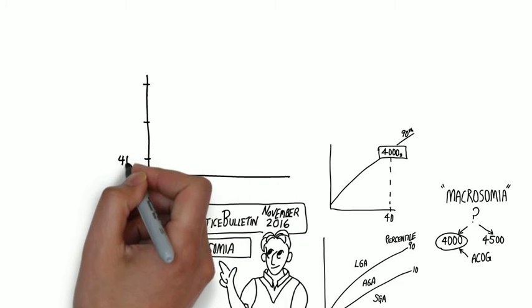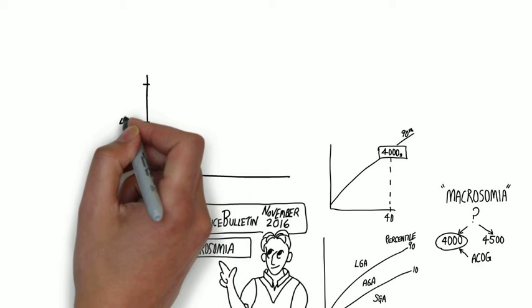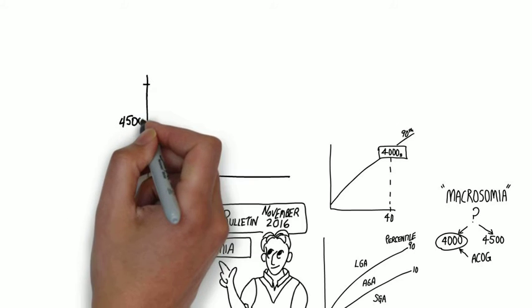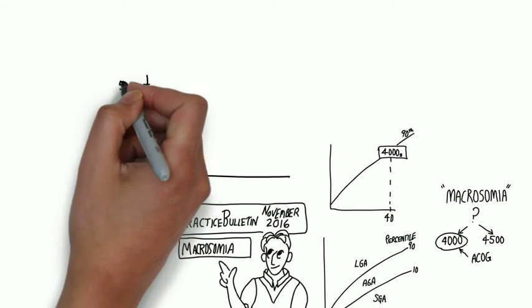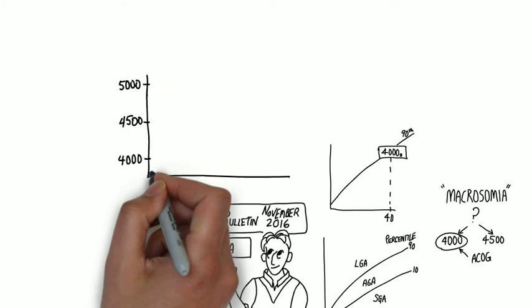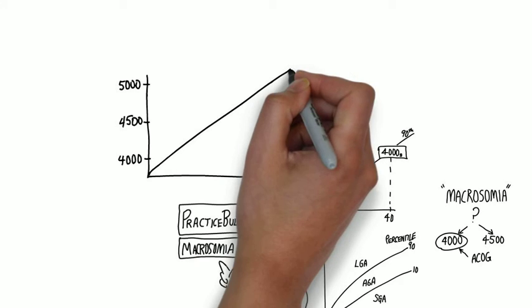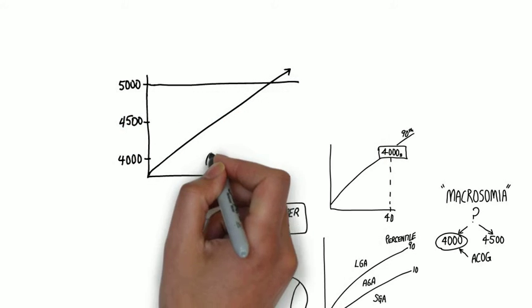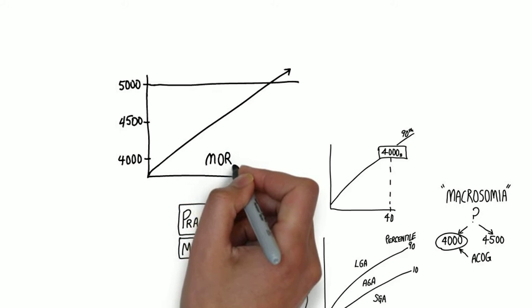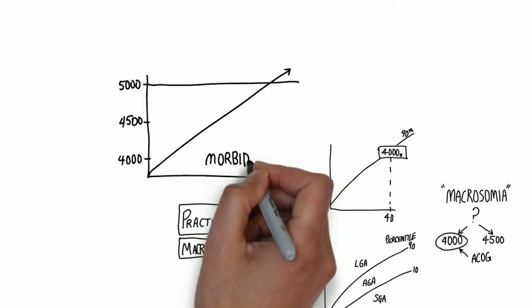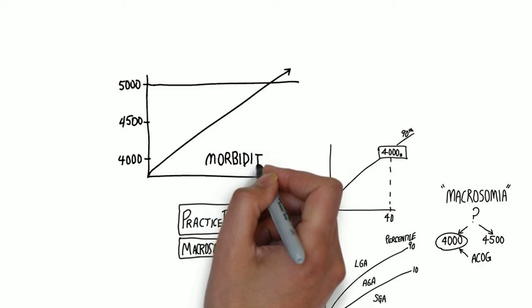What's clinically important about macrosomia is whether a fetal weight is associated with adverse outcomes. For the purpose of clarity, the Practice Bulletin defines macrosomia as greater than 4,000 grams. It goes on to stratify the macrosomia into three categories. The first, 4,000 to 4,499. In this category, there is an increased risk of labor abnormalities and newborn complications.